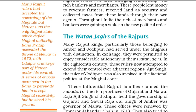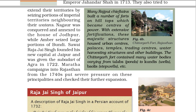The Watan Jagirs of the Rajputs. Many Rajput kings, particularly those belonging to Amber and Jodhpur, had served under the Mughals with distinction. In exchange they were permitted to enjoy considerable autonomy in their Watan Jagirs. In the 18th century, these rulers now attempted to extend their control over adjacent regions. Ajit Singh, the ruler of Jodhpur, was also involved in the factional politics at the Mughal court. These influential Rajput families claimed the Subadari of the rich provinces of Gujarat and Malwa. Raja Ajit Singh of Jodhpur held the governorship of Gujarat, and Sawai Raja Jai Singh of Amber was governor of Malwa. These offices were renewed by Emperor Jahandar Shah in 1713. They also tried to extend their territories by seizing portions of imperial territories neighboring their Watans. Nagaur was conquered and annexed to the house of Jodhpur, while Amber seized large portions of Bundi. Sawai Raja Jai Singh founded his new capital at Jaipur and was given the Subadari of Agra in 1722. Maratha campaigns into Rajasthan from the 1740s put severe pressure on these principalities and checked their further expansion.